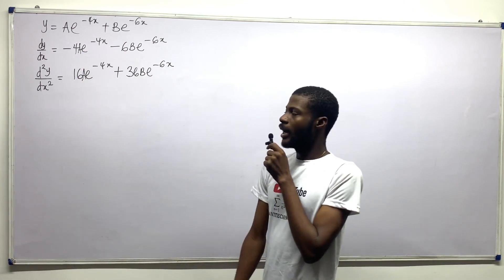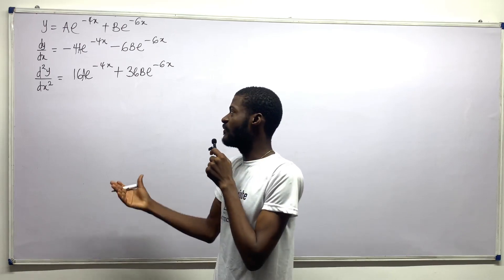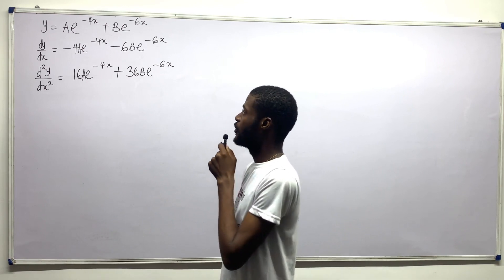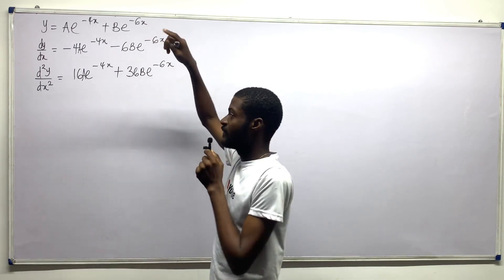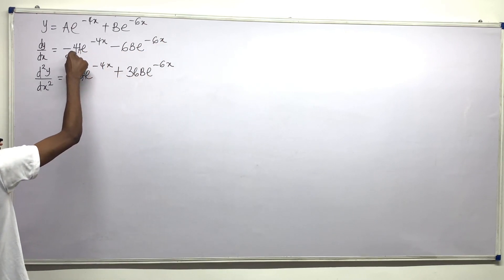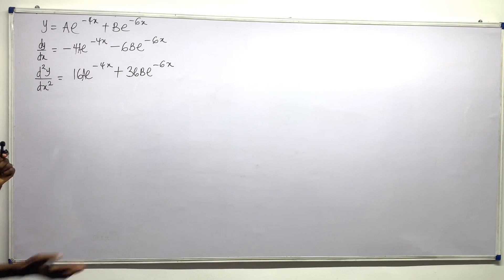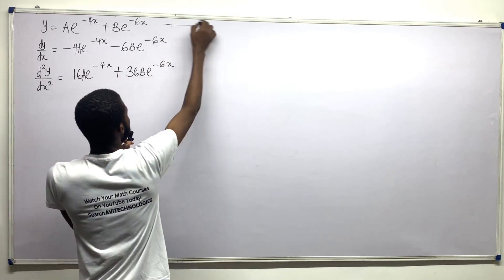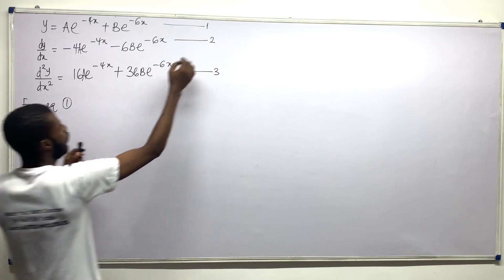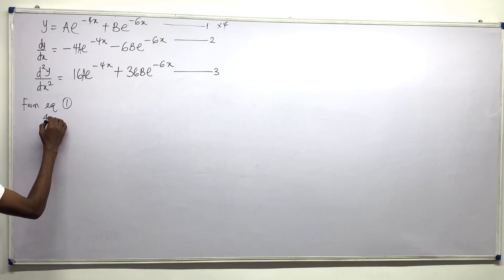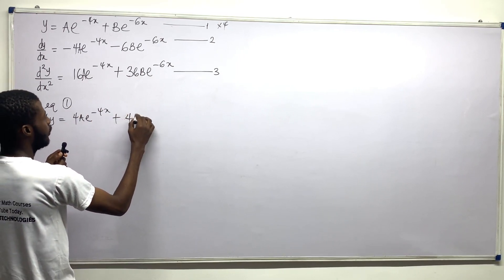By definition there should be no A and no B in the final differential equation. Since it is not easy to make either A or B the subject of formula directly, we solve by elimination using these equations. Multiplying equation 1 by 4 gives: 4y = 4Ae to negative 4x plus 4Be to negative 6x. Call this equation 1 multiplied, used alongside equation 2.